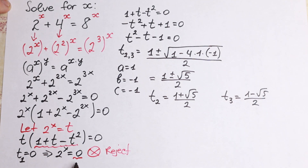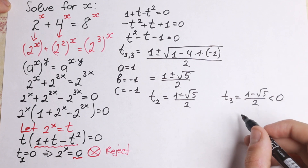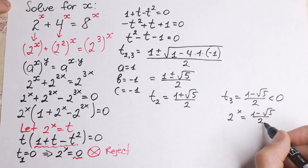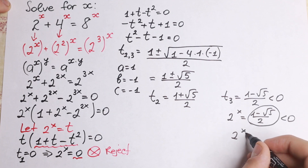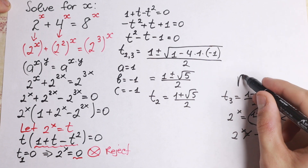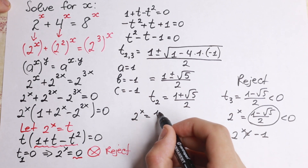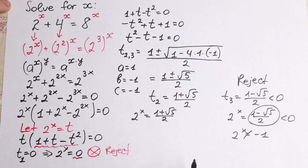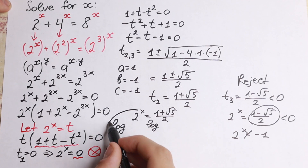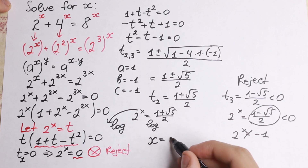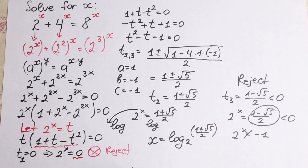We already rejected t equal to 0. We must also reject the negative root t₃, because (1 minus √5)/2 is less than 0, and 2 to the power x cannot be negative. So we only keep t₂: 2 to the x equal to (1 plus square root of 5) over 2. Taking the logarithm base 2 of both sides, x equals log base 2 of (1 plus square root of 5) over 2. This is our solution.